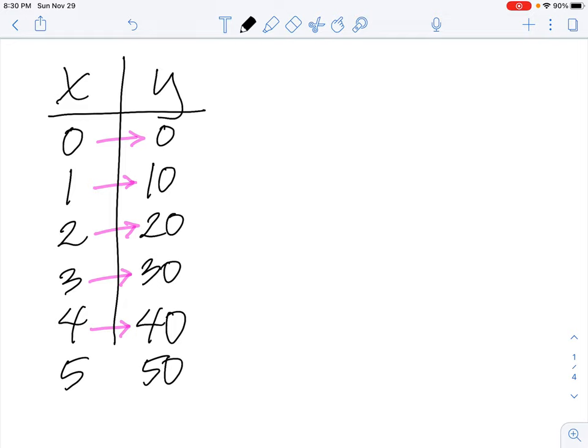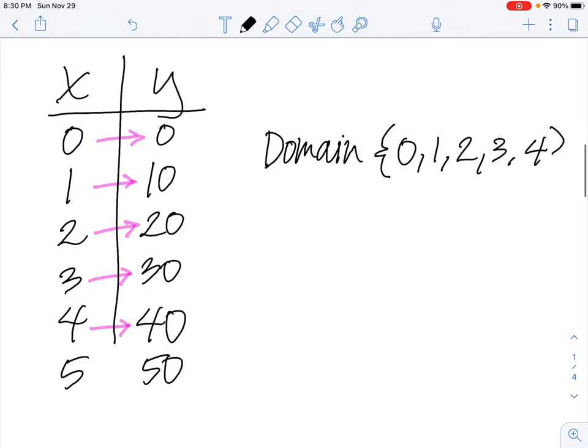The other way to show that function is to do something like this. Say, the domain of my function is these values: 0, 1, 2, 3, and 4. We put them in a bracket like that.